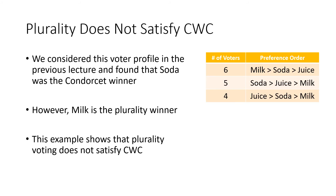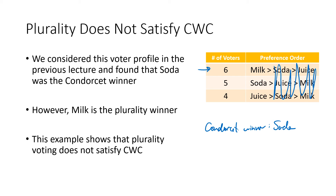The plurality method that we typically use in the United States does not satisfy the Condorcet Winner Criterion. The example is the milk, soda, and juice election from the previous lecture. We found that soda was the Condorcet winner — soda beat all opponents one-on-one — but the plurality winner is milk, with six votes, compared to five for soda and four for juice. Six is the biggest number, so milk is the plurality winner. Because the plurality winner didn't match the Condorcet winner, plurality does not satisfy the CWC.